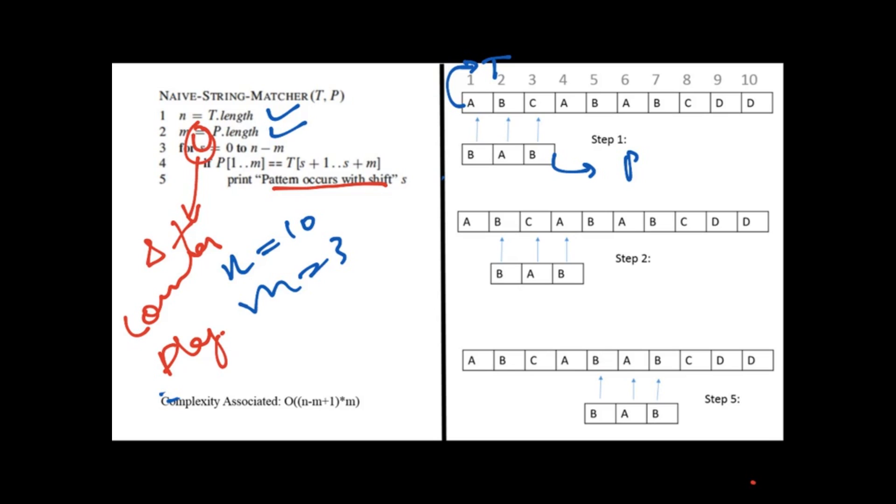Our shift is at 1. We will start matching. When the shift is at 1, we can see the text contains ABC and we will match it with BAB. It is not matching. We will move the pattern one shift ahead.